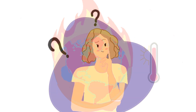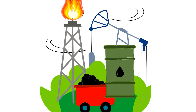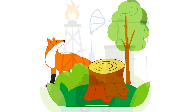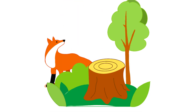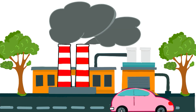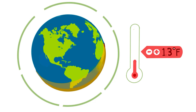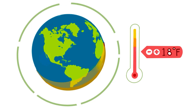So what happens when we disrupt this balance? Human activities such as burning fossil fuels, deforestation, and industrial processes can increase the concentration of greenhouse gases in the atmosphere. While having some greenhouse gases is essential, having too many can lead to climate change.